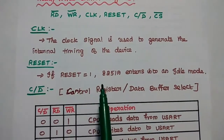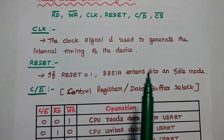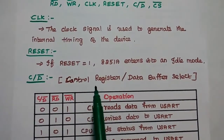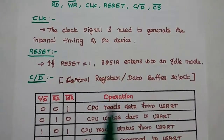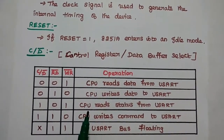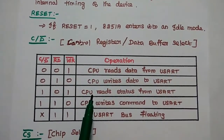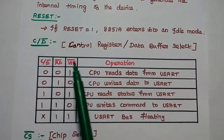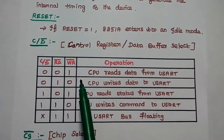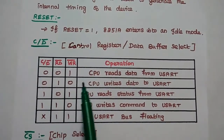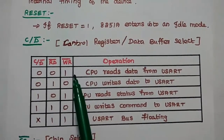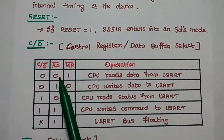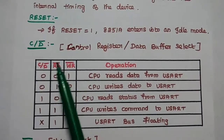If reset equals 1, the 8251A enters the idle state. C/D bar means control register or data buffer select. The read/write operations are selected based on the combination of C/D bar, read bar, and write bar — these are active low signals. When the combination is 001, the CPU reads data from the USART. When it is 010, the CPU writes data into the USART.